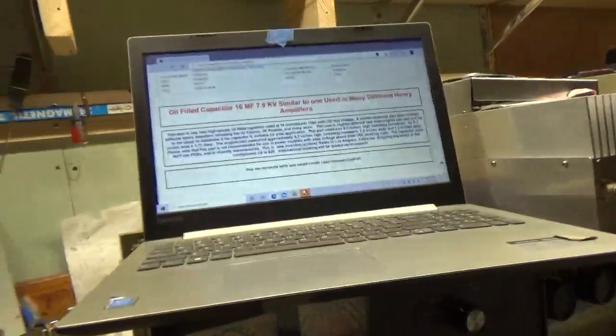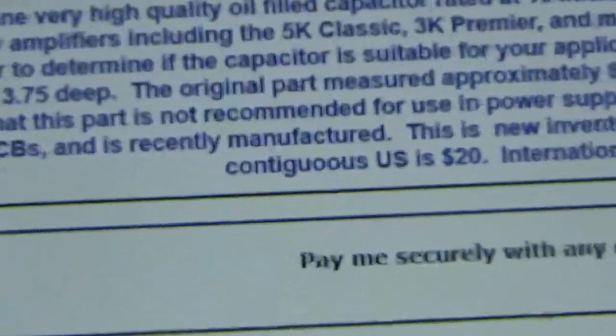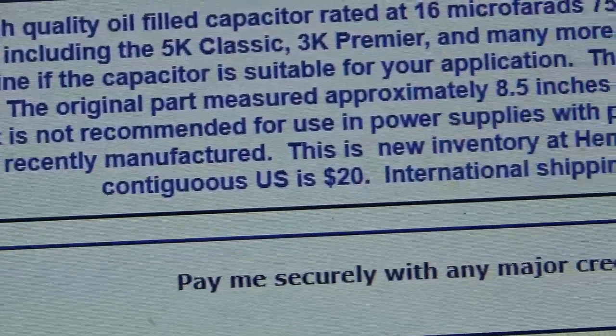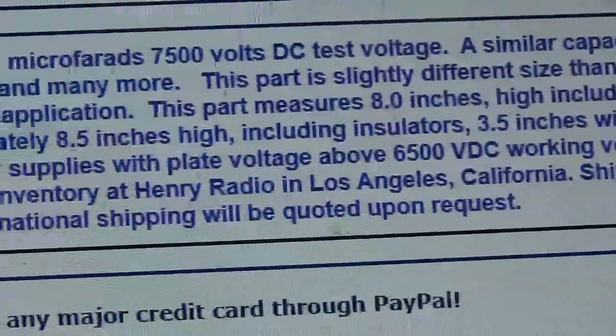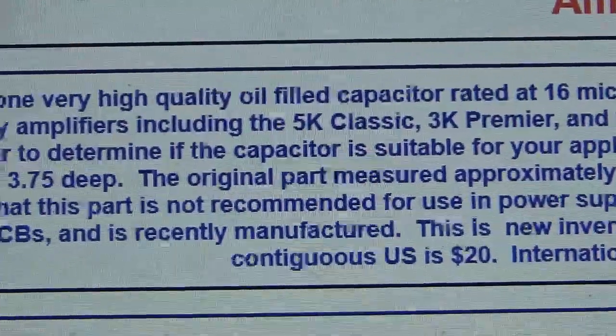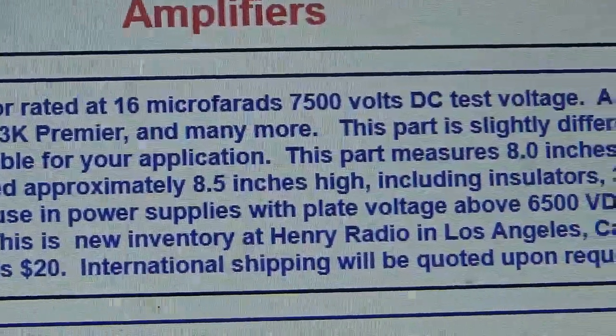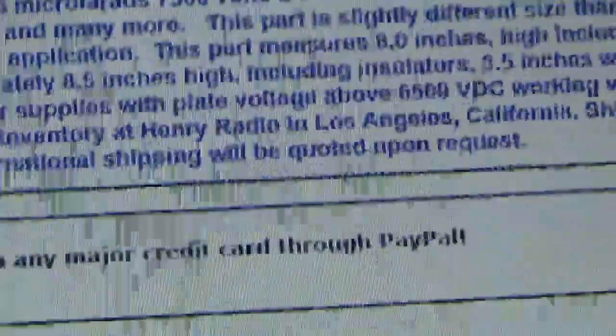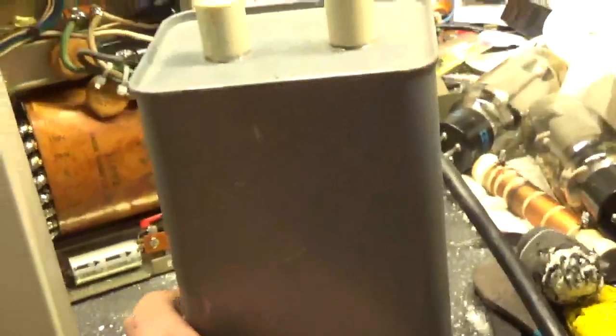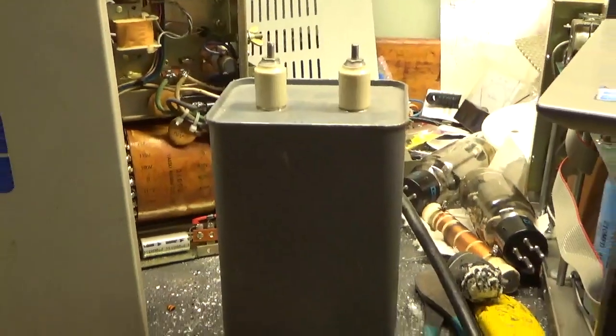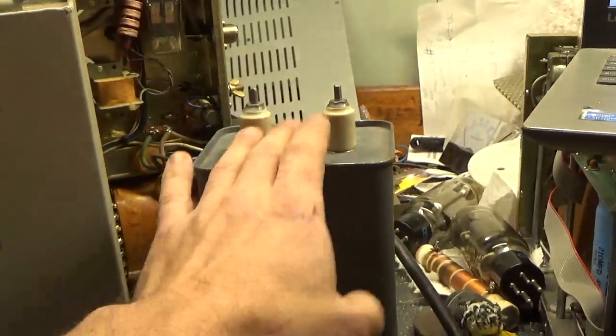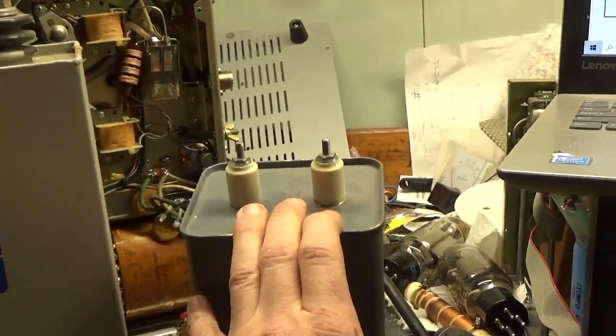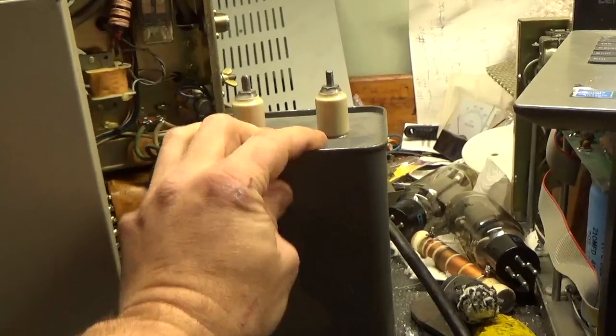See right here on a completed listing online. It says right here, please note that this part is not recommended for use in power supplies with plate voltage above 6,500 volts DC working volts. It says 60 microfarads, 7,500 volts DC test voltage. Good cap, but it is what it is. So I wouldn't run more than 5,500 on it. That's me. I like to have about 1,000 volts of headroom. I've seen the insulator blow off. I've seen them short internally, but that's because they're being abused. They were at 7 kV or more, and they're just being abused.